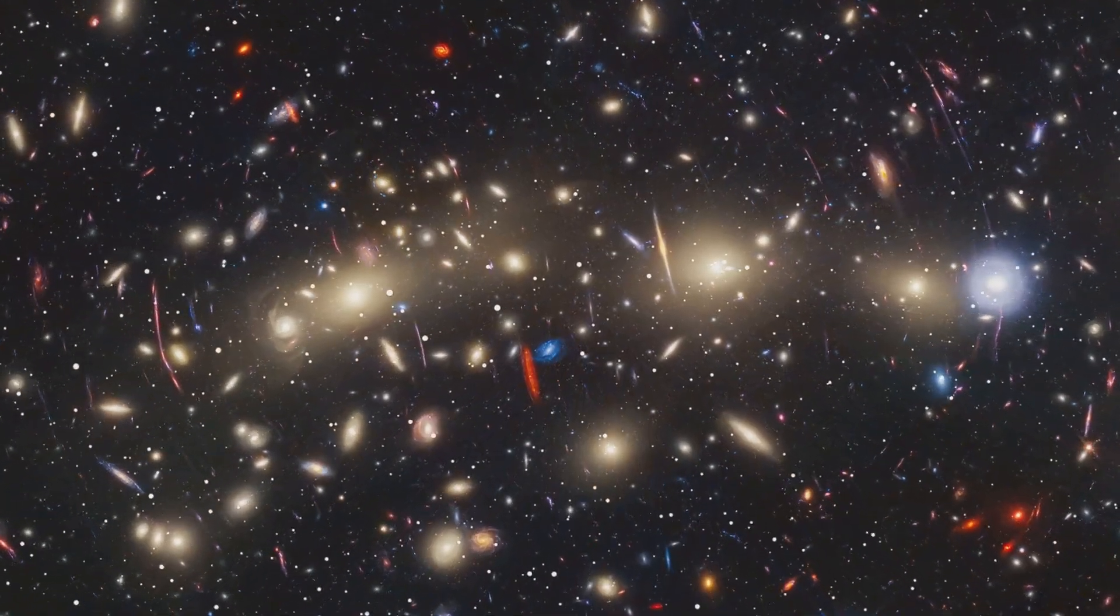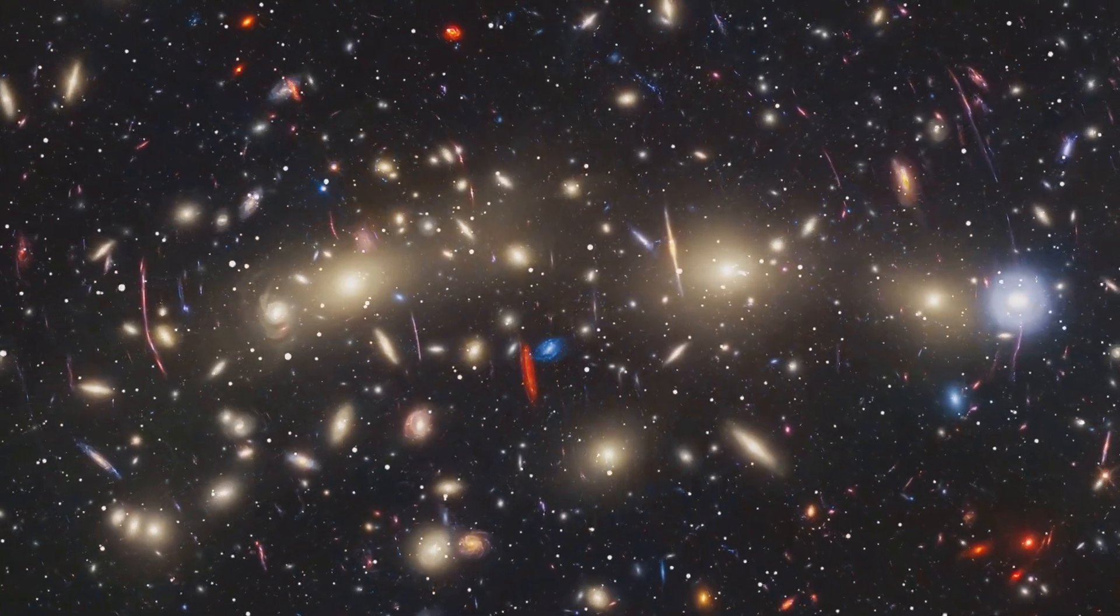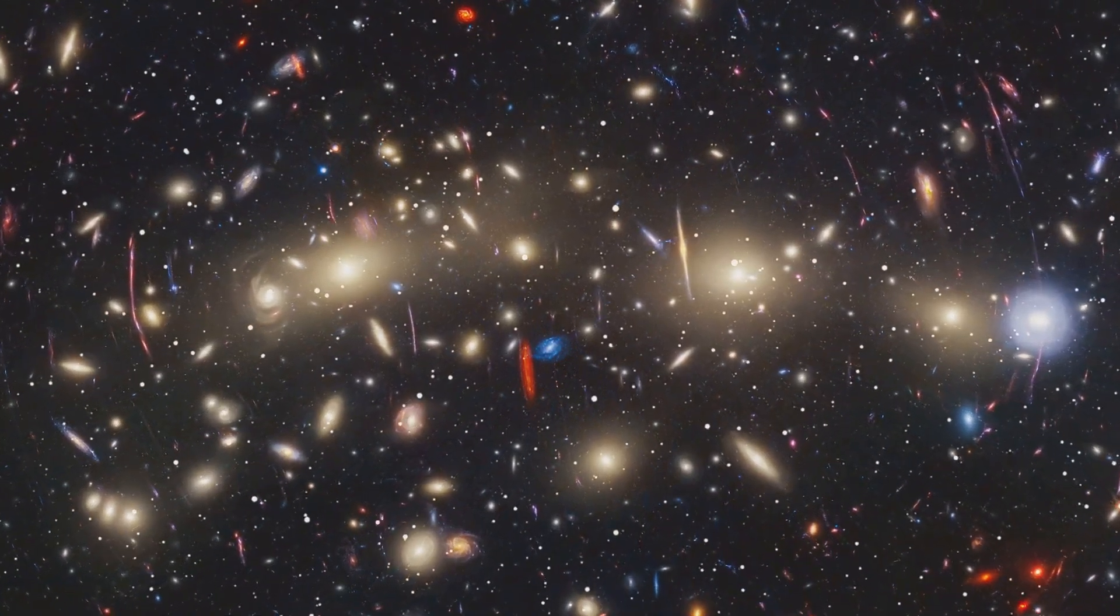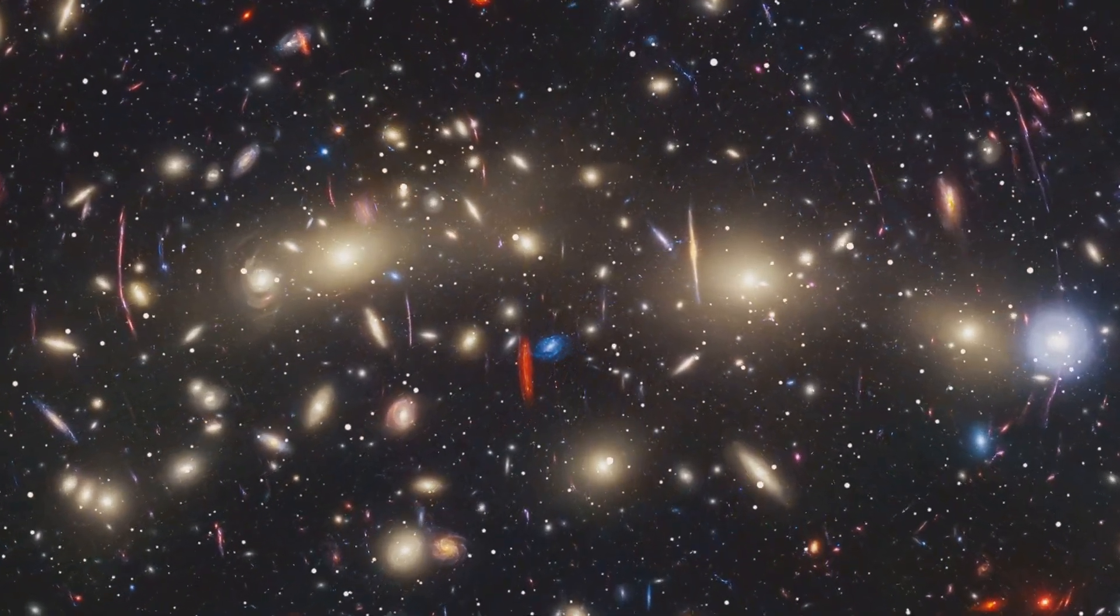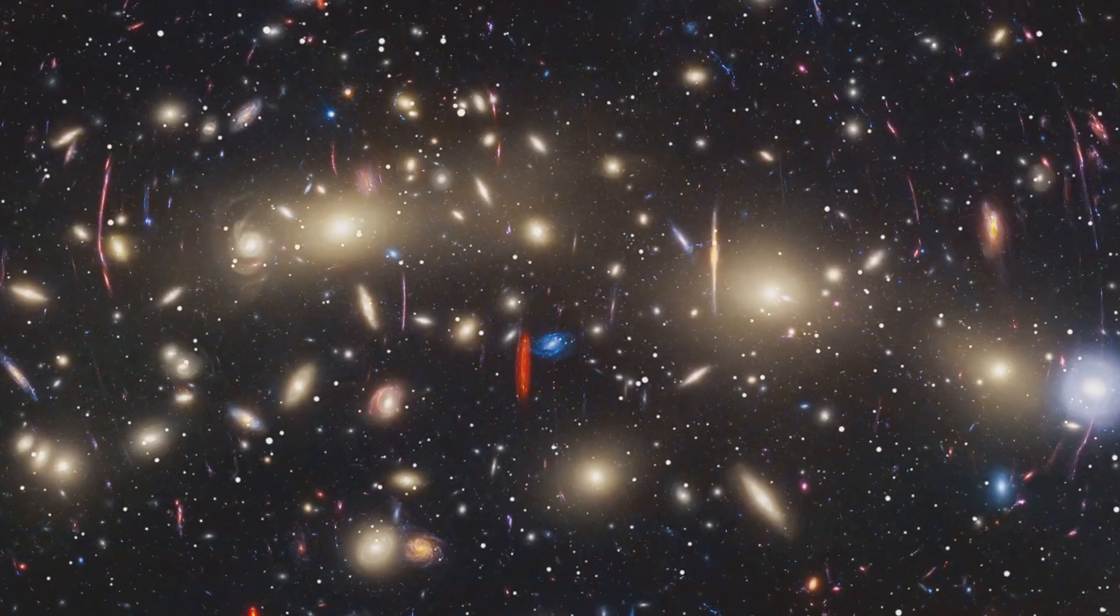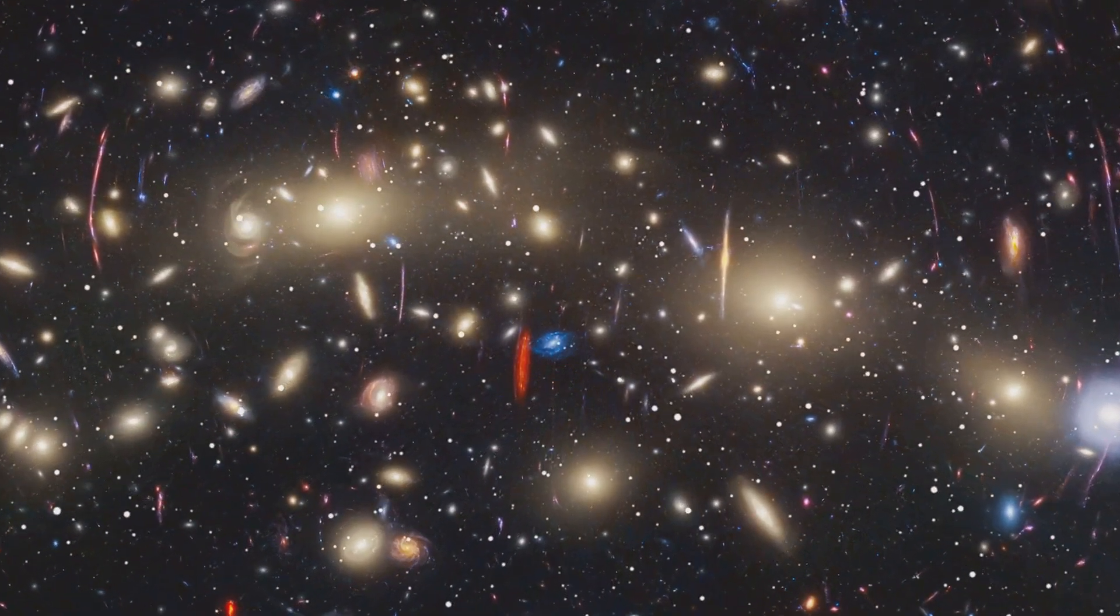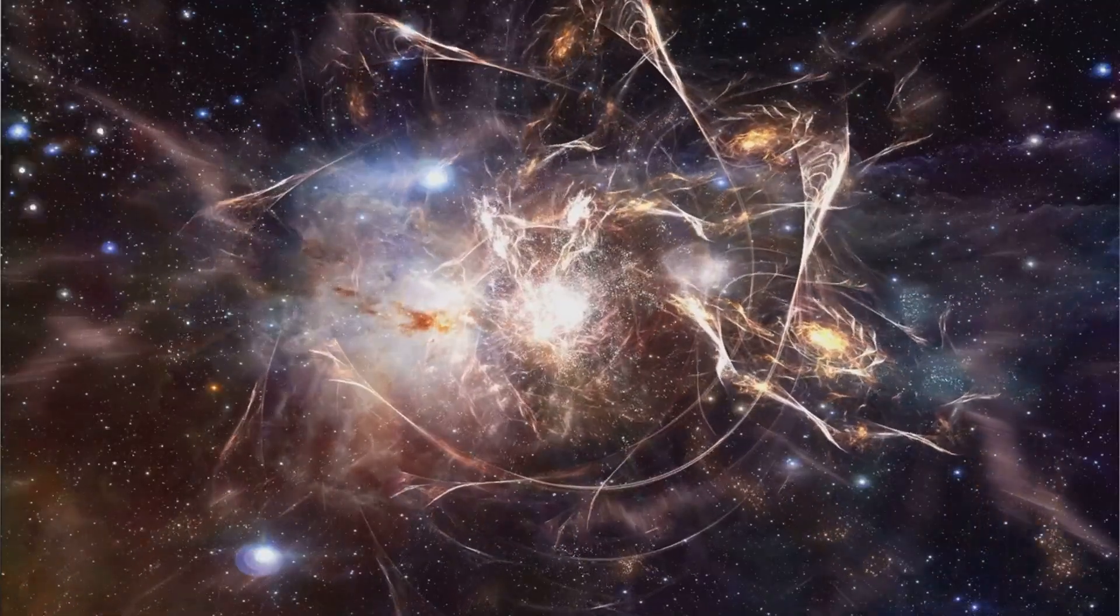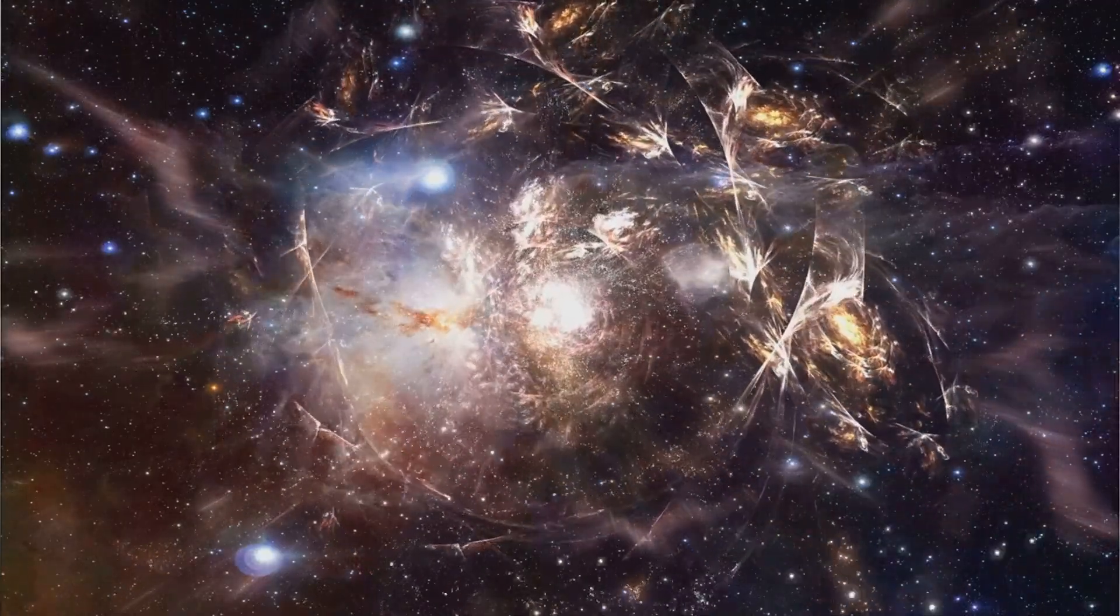Eventually, stars will exhaust their fuel and burn out. Galaxies will drift apart, and black holes will slowly evaporate through a process known as Hawking radiation. In the end, the universe will be left with a vast, cold expanse, where particles are so spread out that they rarely interact. This final state is known as thermodynamic equilibrium, where everything is uniformly cold and inert.